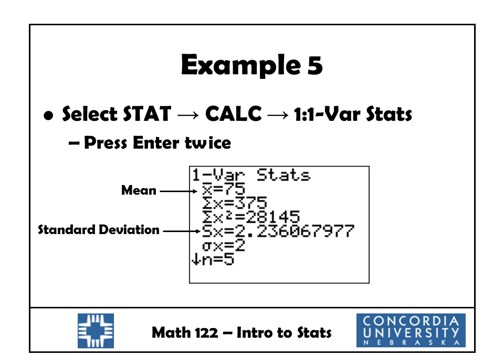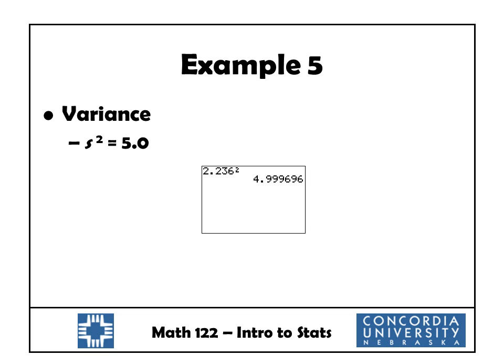Now calculate one-variable statistics: select STAT Calc, option 1 for 1VarStats. Press Enter twice. The output shows x-bar equals 75 — exactly the mean we expected. Below that, SX is our standard deviation: 2.236. To get the variance, square that standard deviation: 2.236 squared comes out to approximately 5.